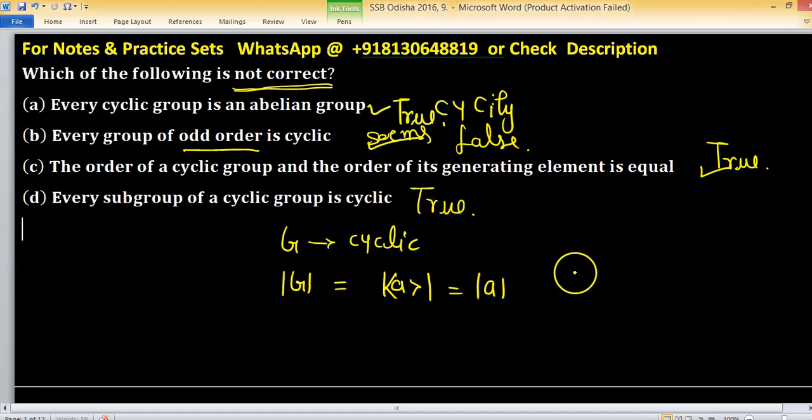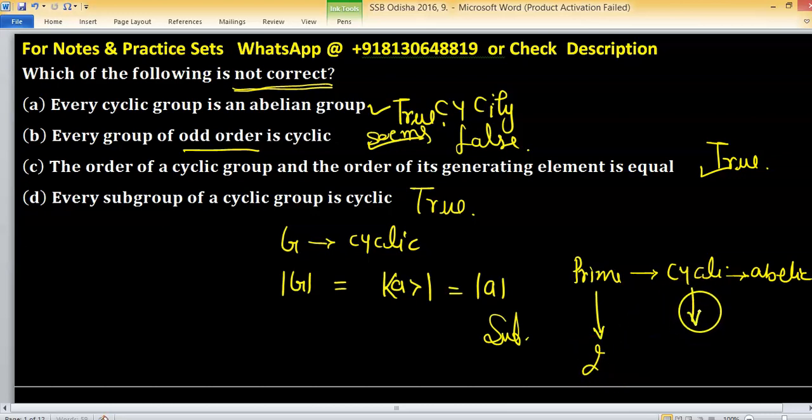So keep remember: this is prime, this is cyclic, and this is abelian. If order of group is prime then it is cyclic. Cyclicity implies abelian. And their subgroups: If group order is prime then there are only two subgroups. If group is cyclic then subgroup is also cyclic.